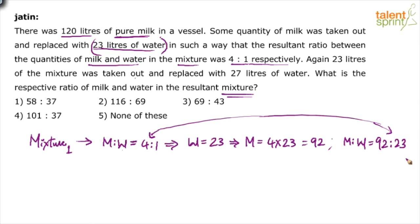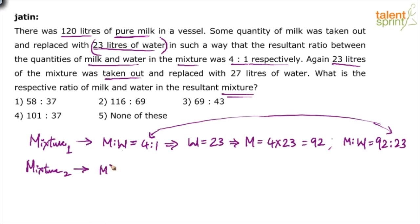Now let us look at the next part — Mixture 2. In this mixture of 92 liters of milk and 23 liters of water, again, 23 liters of the mixture was taken out and replaced with 27 liters of water. Let us assume that in Mixture 2, we have got milk M' and water W'.